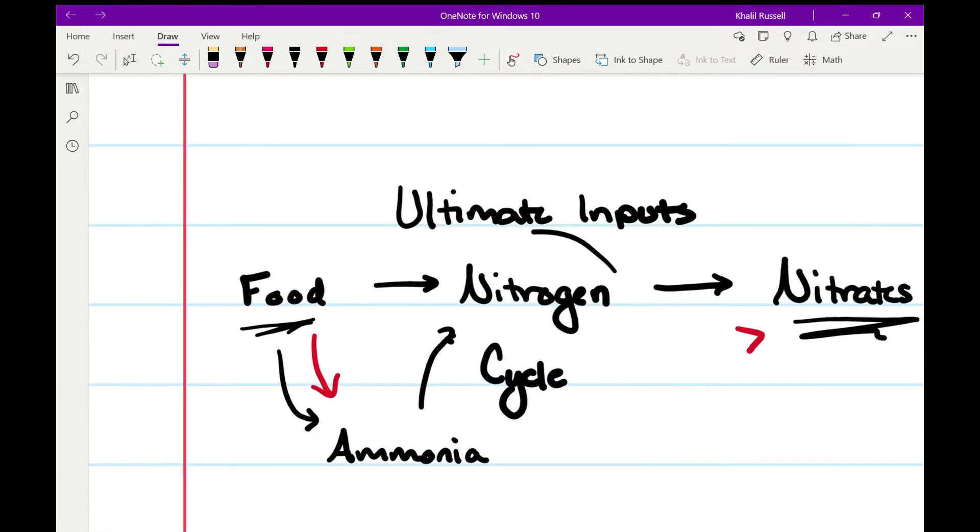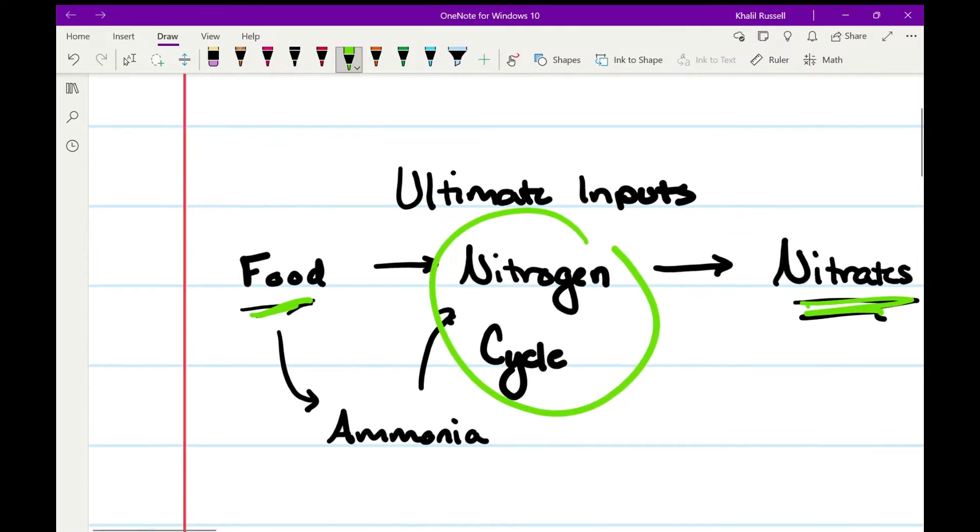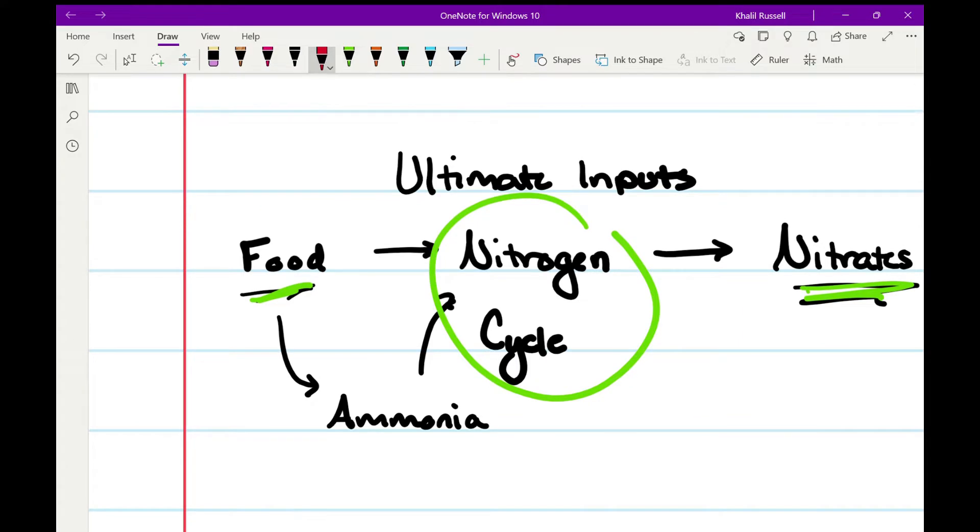Here's the nitrogen cycle. Ultimately, you have inputs which are food, outputs which are nitrates, and the process which is the nitrogen cycle. But then you also have, technically speaking, food becomes ammonia which is turned into nitrates via the nitrogen cycle.